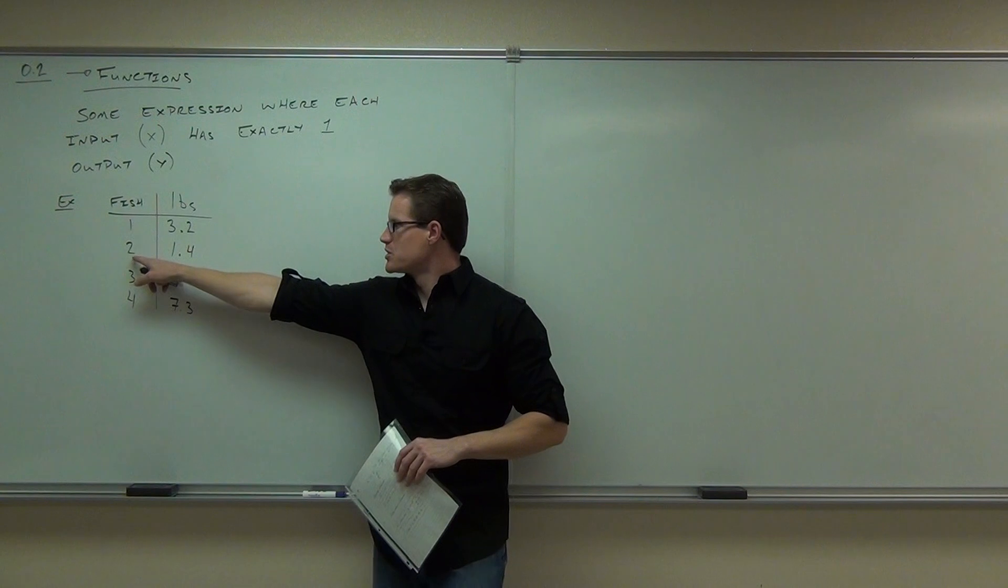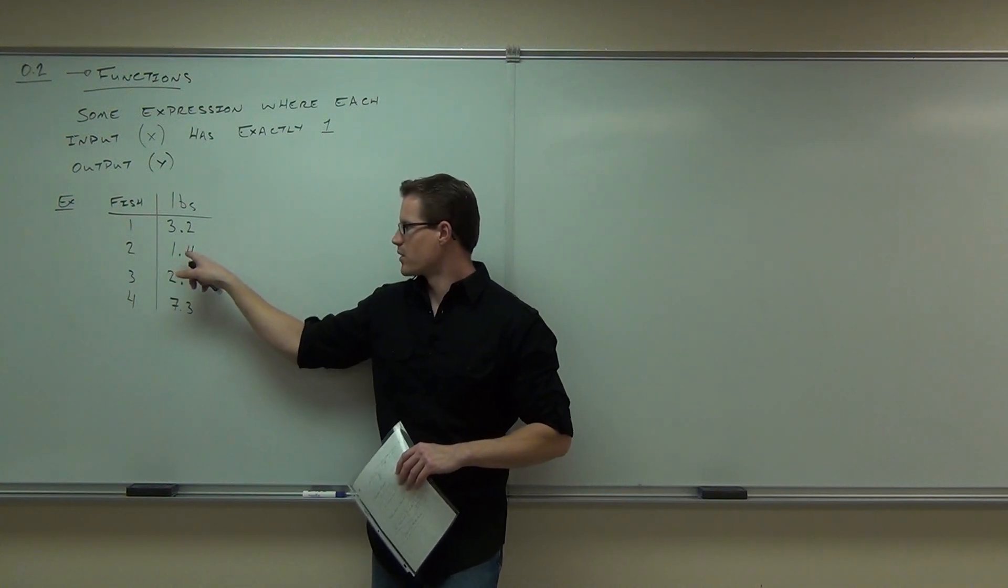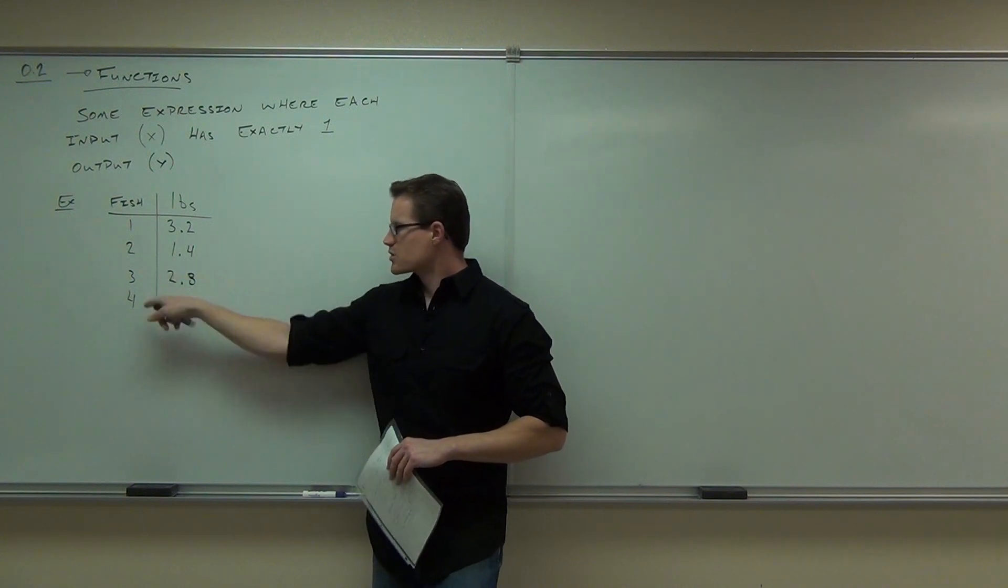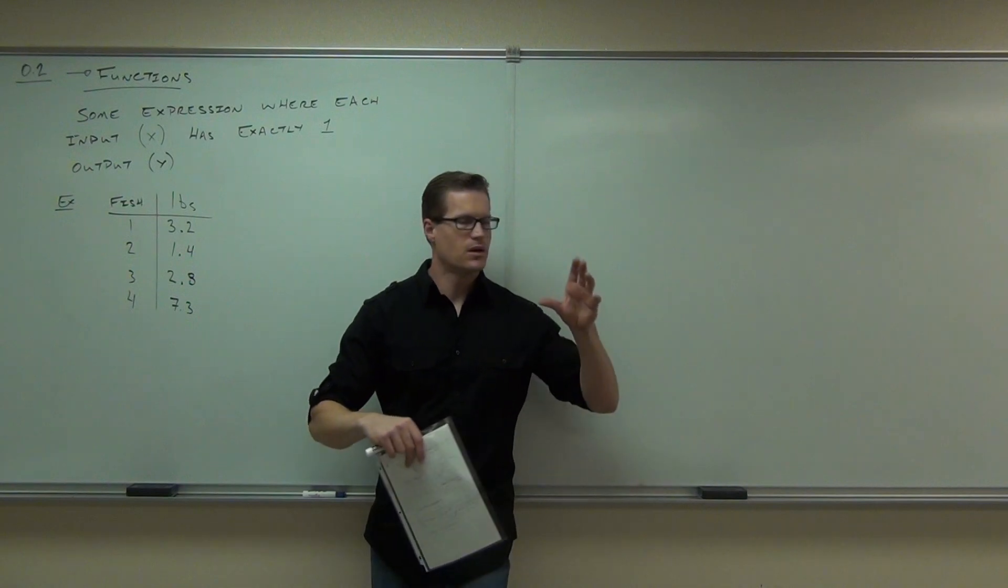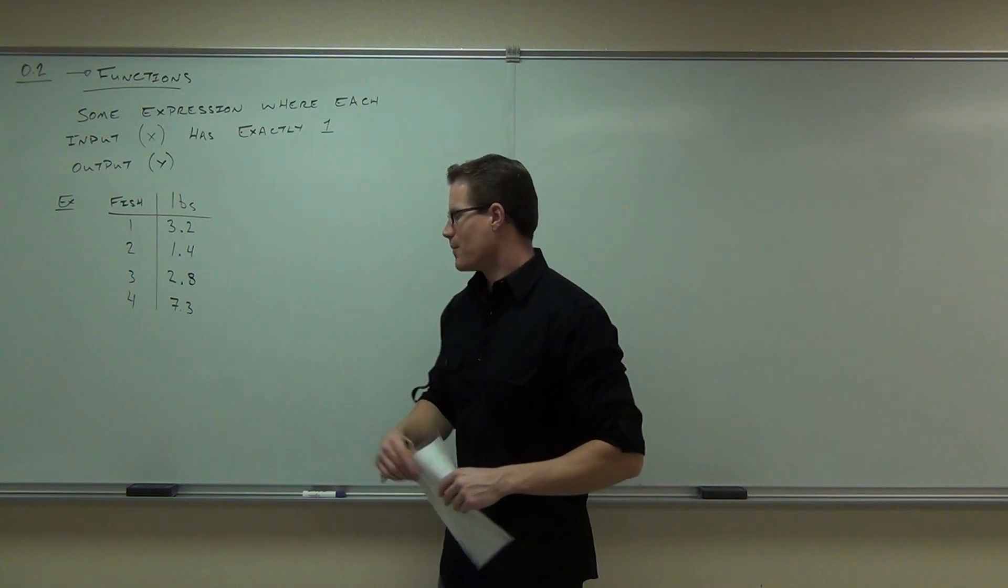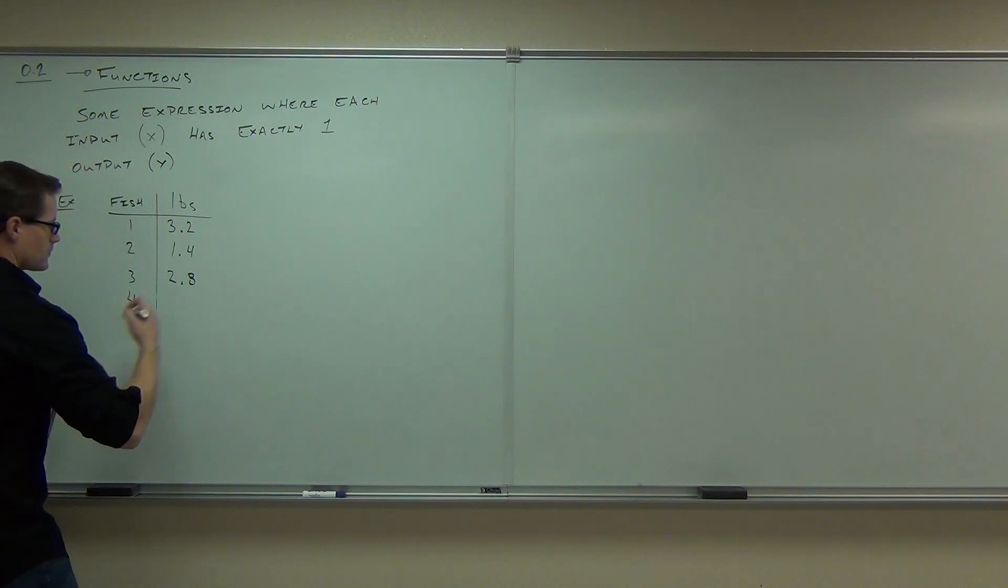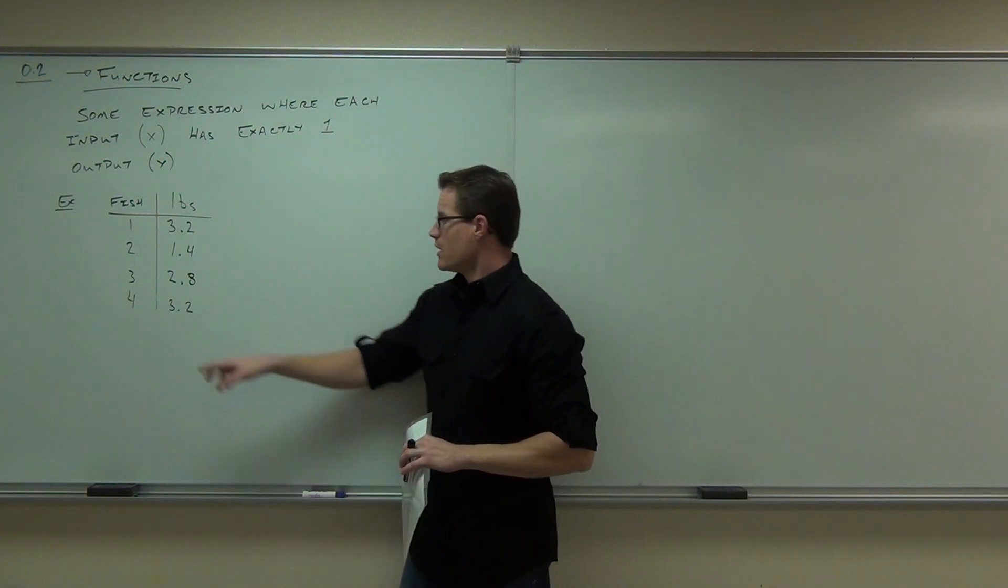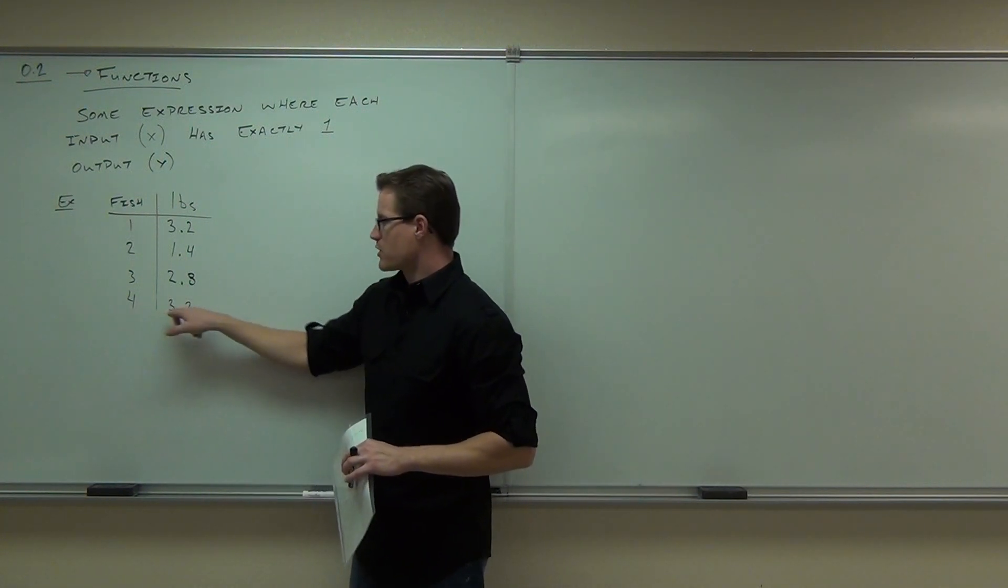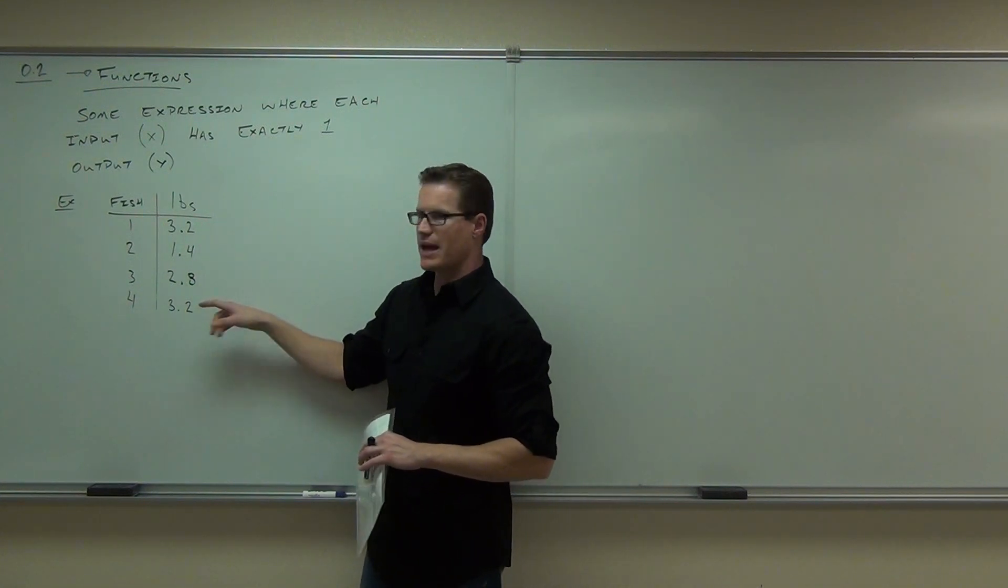How about number two? Does number two give me out just one weight? Yeah, it doesn't say 1.4 and then something else over here. That would not be a function. So this thing is a function. Any fish that I have has one specific weight that we're talking about. If I did this, would it still be a function? The answer is, yeah. Yeah, it would be a function. This fish 4 weighed 3.2 pounds, not something else. It doesn't matter that these things are the same. That can happen.